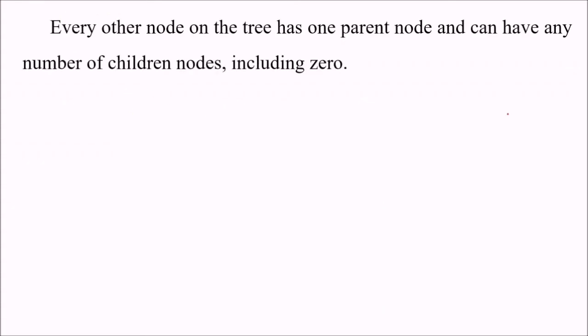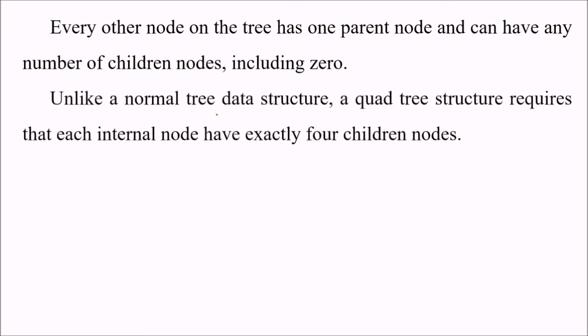Every other node of the tree has one parent and can have any number of children nodes, including zero. Unlike a normal tree data structure, quadtree structure requires that each internal node has exactly four children nodes.